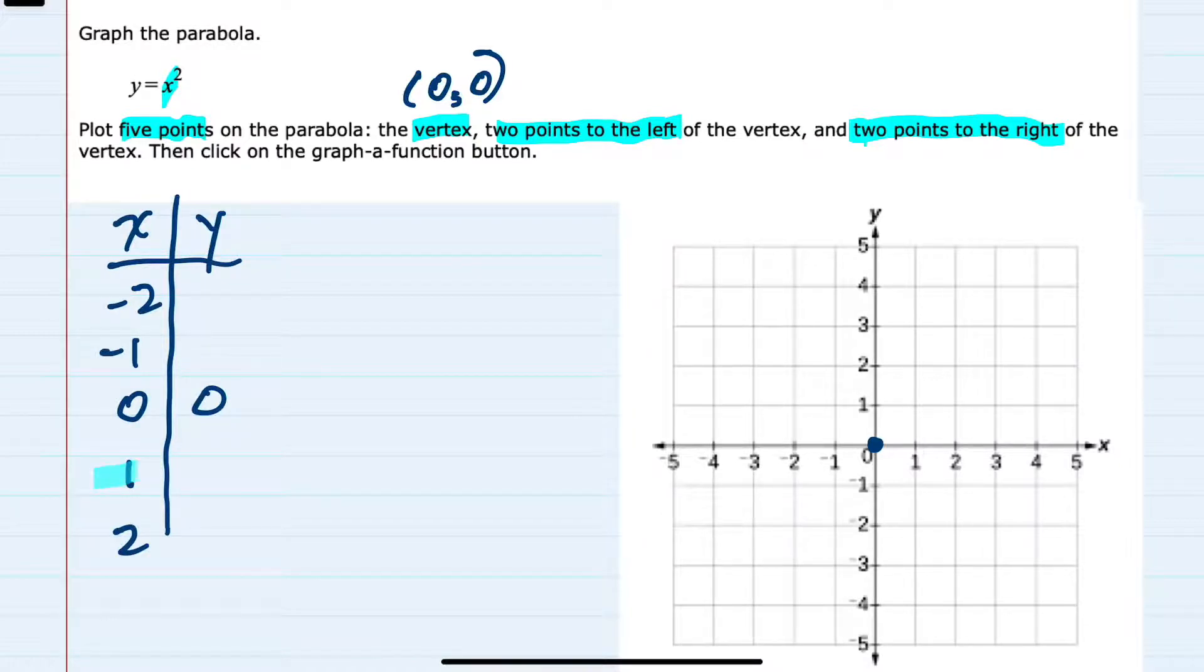So I'll start with x equals 1. If I substitute that in, I would have y equals 1 squared, which gives y equal 1. So that's the point (1, 1).